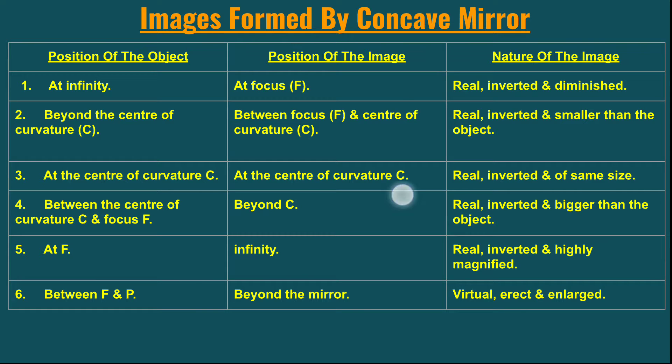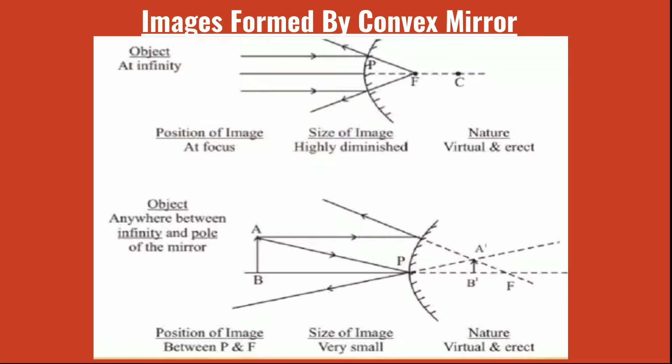Today I'll start with the images formed by the convex mirror. There are two conditions in which the convex mirror forms images. The first is when the object is at infinity — the position of the image is at the focus. From the diagram you can see the rays are coming from infinity, reaching the mirror, and after reflection they bounce back. The reflected rays, when produced backward, form an image at the focus. The nature of the image is virtual and erect.